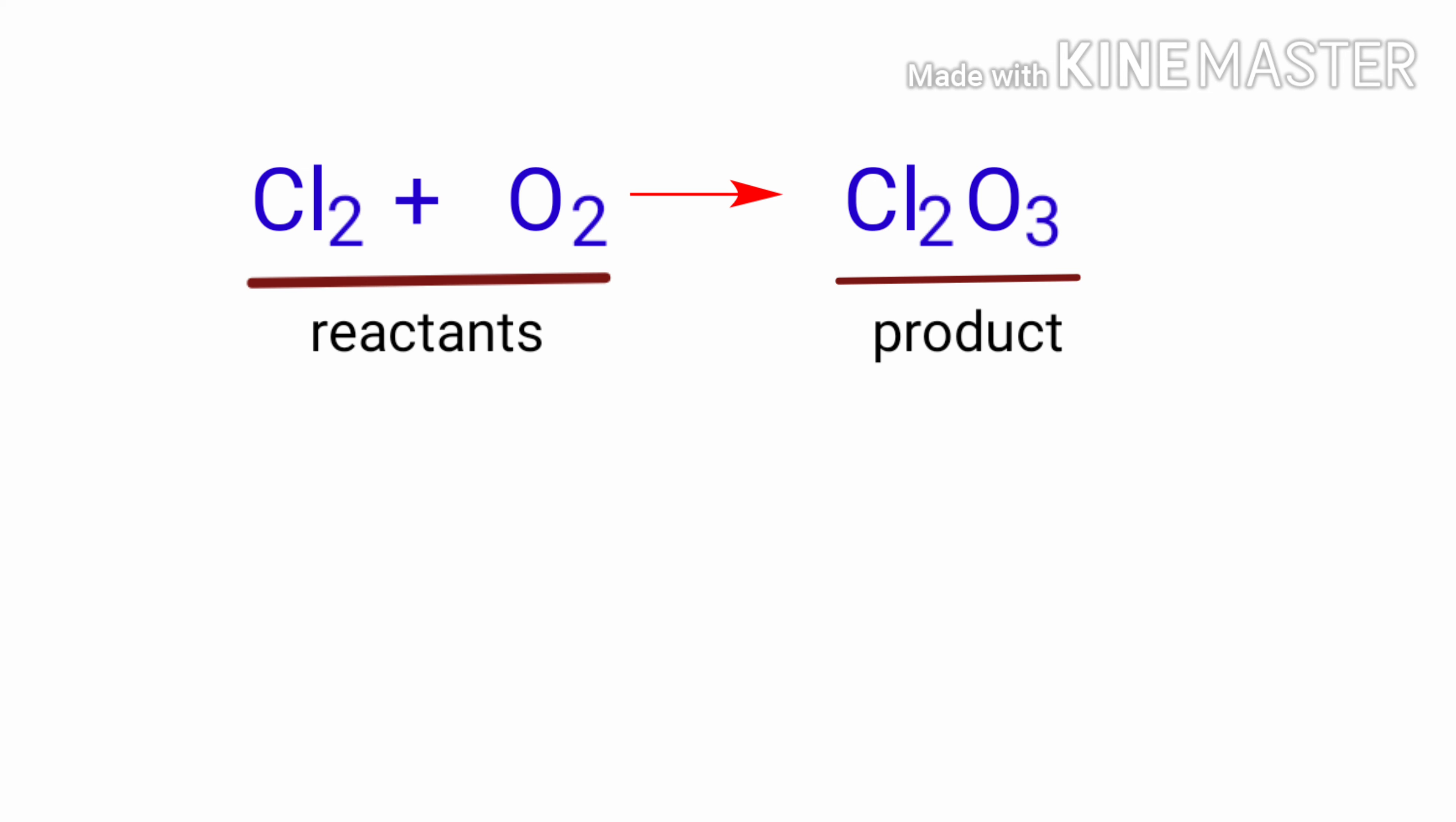In this equation, the reactants are chlorine and oxygen and the product is dichlorine trioxide.